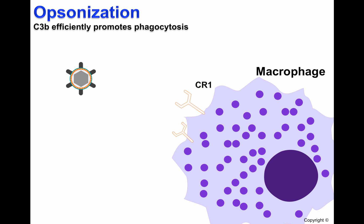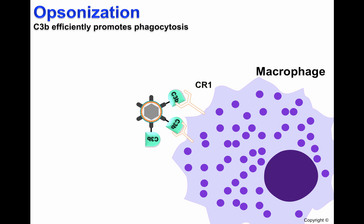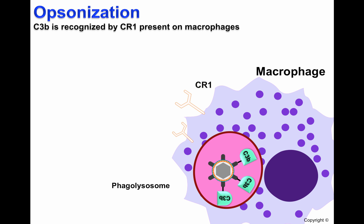Opsonization is also important in phagocytosis. When C3B is deposited on the surface of pathogens, it can be recognized by receptors found on macrophages such as CR1, or complement receptor 1, and the pathogen will be phagocytosed. Inside macrophages, the lysosome will fuse with the phagosome in order to form a phagolysosome that ultimately kills the pathogen.